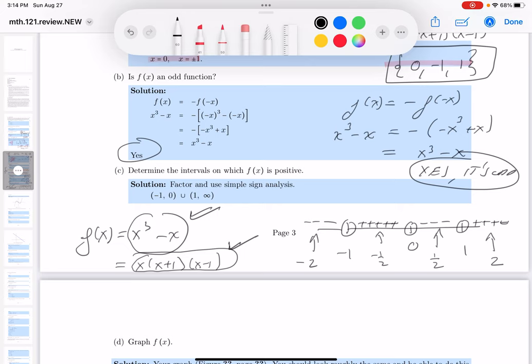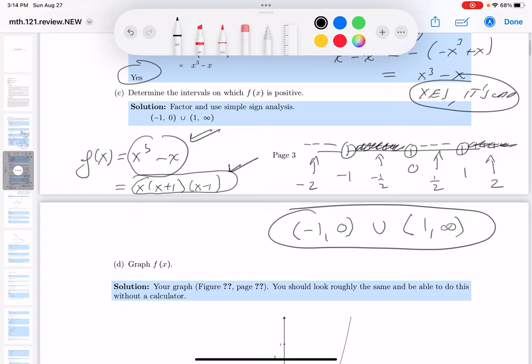So what are the questions going to be? Determine the intervals on which f of x is positive. It's positive here, and it's positive here. I'll write that down, and then we'll check the key. So it's positive from minus one up to zero, or it's positive on the interval from one to infinity. Let's take a look at the key, see if we got that. Minus one to zero, one to infinity.